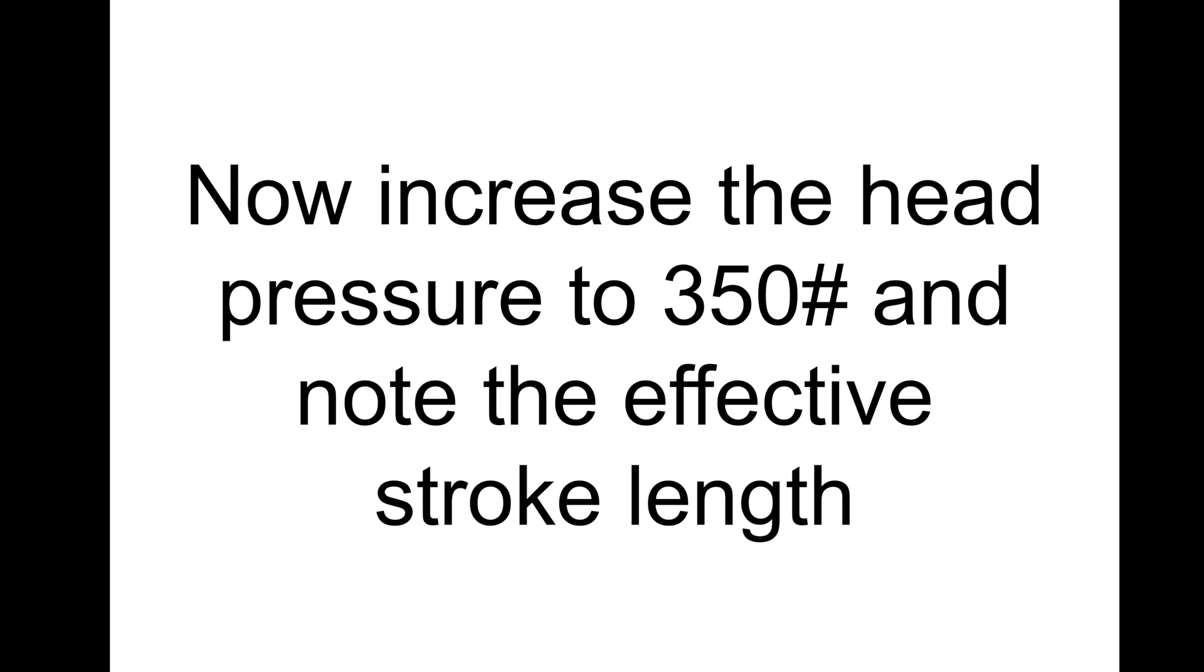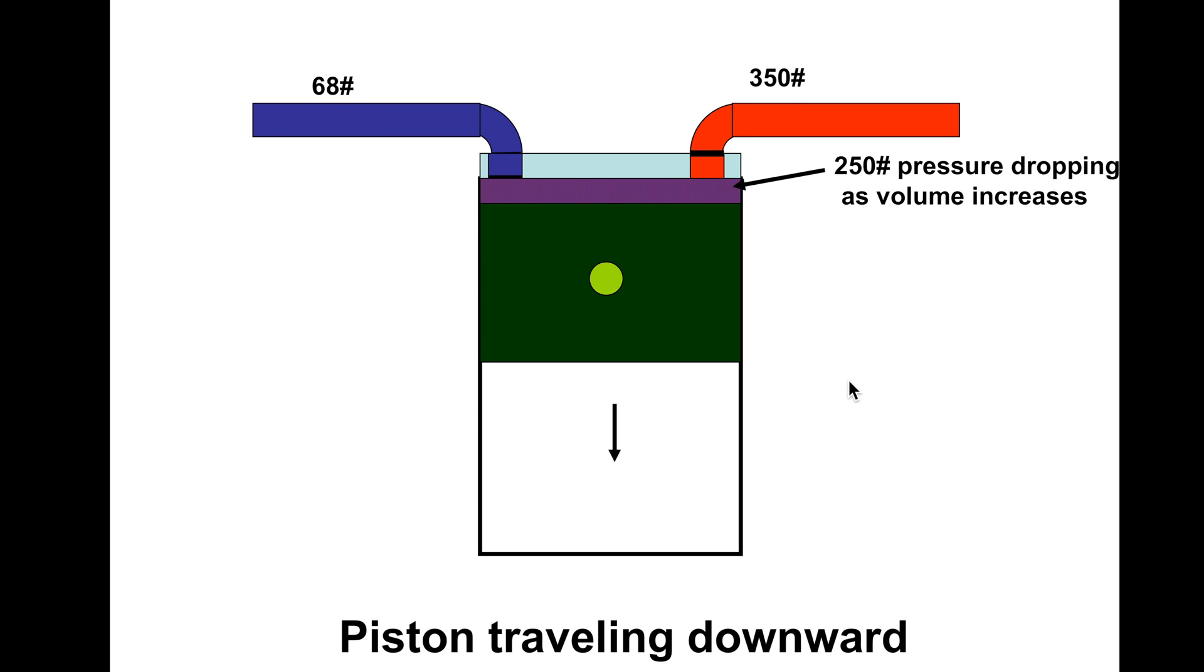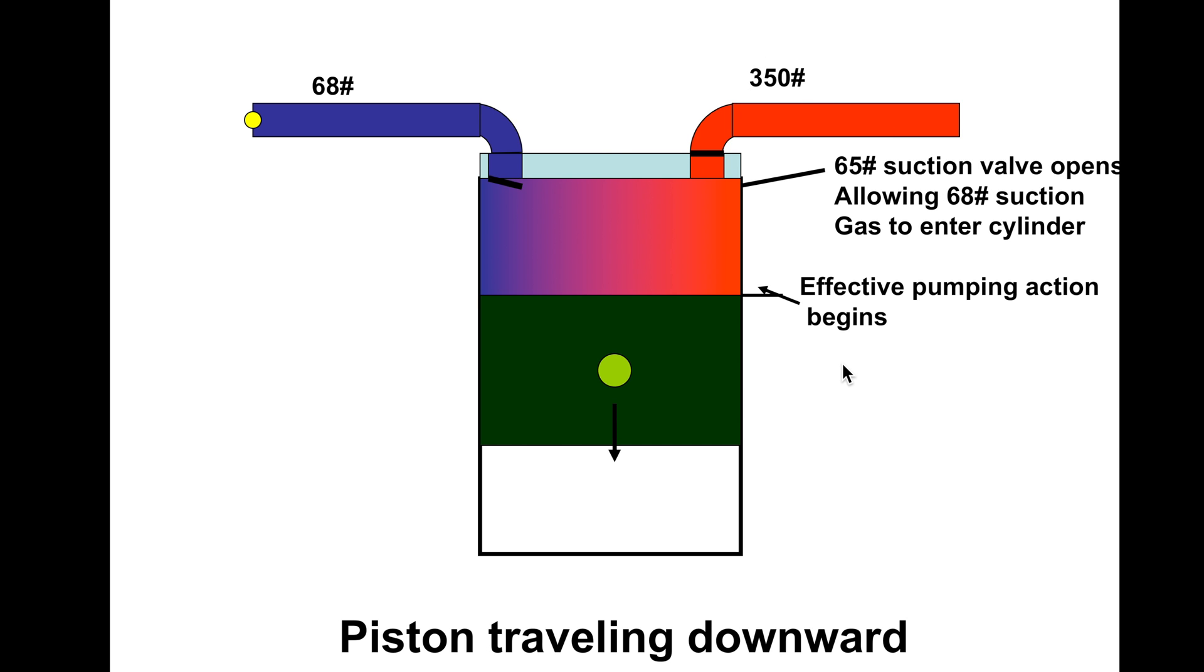350 pounds. We still have that 350 pounds in the clearance volume. As the piston goes down, it'll get to 250 pounds, but nothing's going to happen. Remember, we got to get below 68 pounds from that 350. So it goes down, when it finally reaches 65 pounds, 50 pounds, then the effective pumping action begins. You notice this is a lot farther down that this piston went before we started getting effective pumping action.